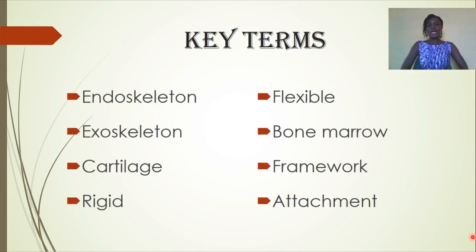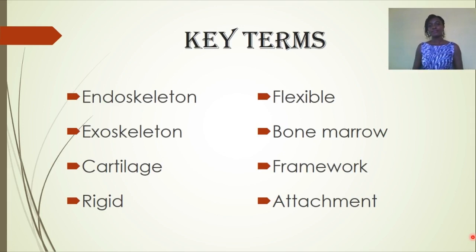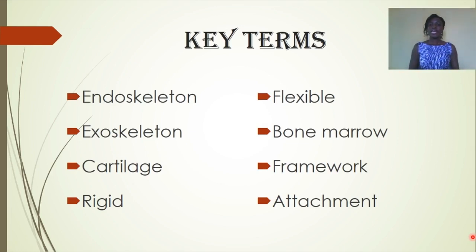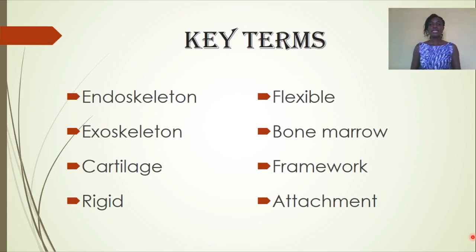Our key terms are: endoskeleton, exoskeleton, cartilage, rigid, flexible, bone marrow, framework, and attachment. By the end of the day, you should be able to familiarize yourself with these words that you will be learning today.